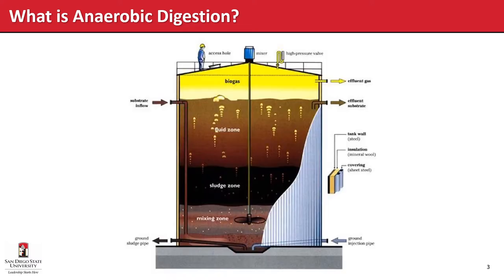What does it look like inside when anaerobic digestion is actually taking place? At the bottom we have the mixing zone where impellers create a well-mixed zone. Above that we see sludge that settles — solids not quite involved in the mixing zone. Above that is a fluid zone with particles but mostly fluid. At the top we have biogas. Substrate comes in at the bottom, gets mixed, produces sludge, and effluent travels up through the fluid zone, while biogas is released to the headspace where it is captured.